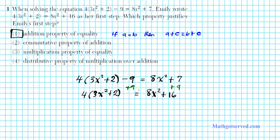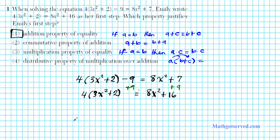The commutative property of addition tells you that a plus b equals b plus a — addition commutes. The multiplication property of equality tells you that if a equals b, then if you multiply the same number to both sides, equality is preserved: a times c equals b times c. The distributive property of multiplication over addition tells you that a times the quantity b plus c equals ab plus bc. So the correct property applied here is the addition property of equality.